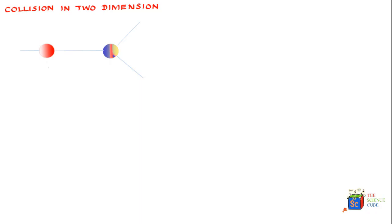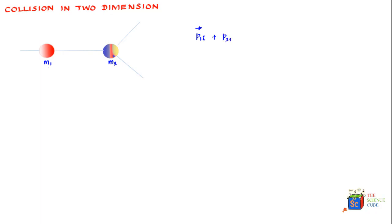And if it happens to be an elastic collision, then the law of conservation of kinetic energy also holds true. So if there are two masses, m1 and m2, and they have a collision so that the resulting collision is two-dimensional, then we can say that the initial momentum of m1 plus the initial momentum of m2 should equal the sum of their momenta after the collision. If the collision is elastic, the kinetic energy of m1 before plus kinetic energy of m2 before should equal the sum of kinetic energies of both masses after the collision.